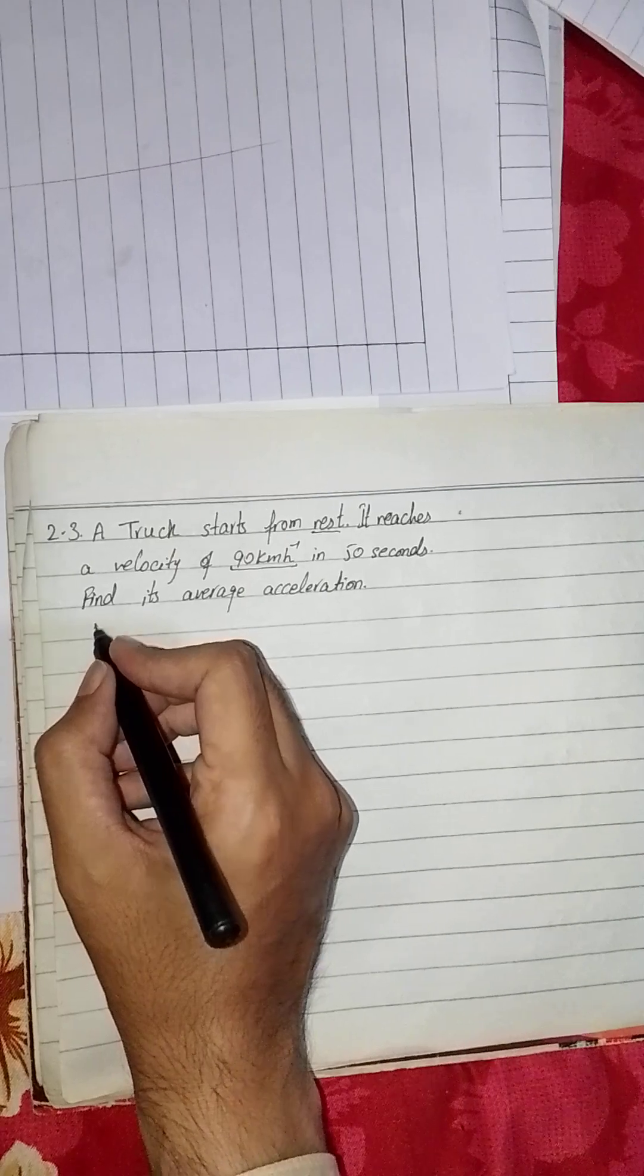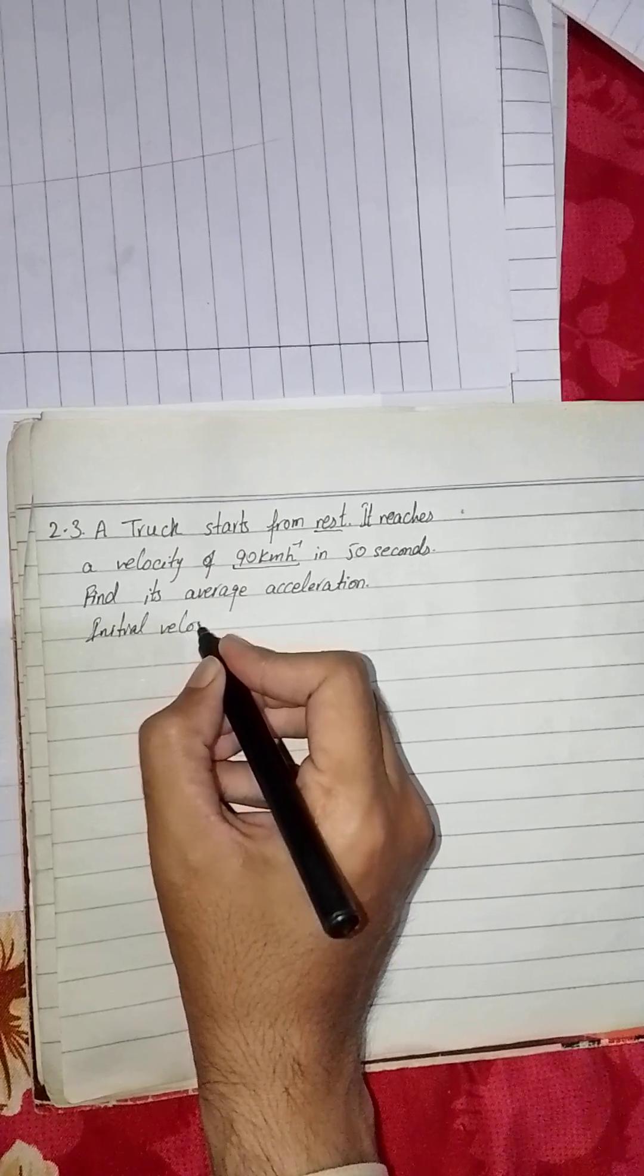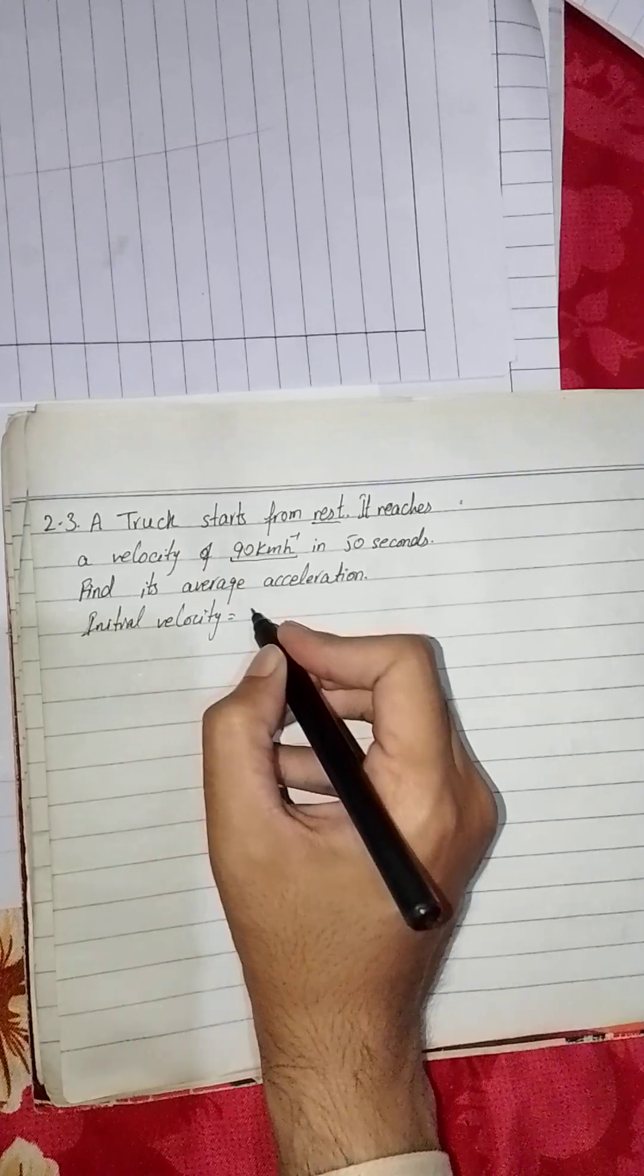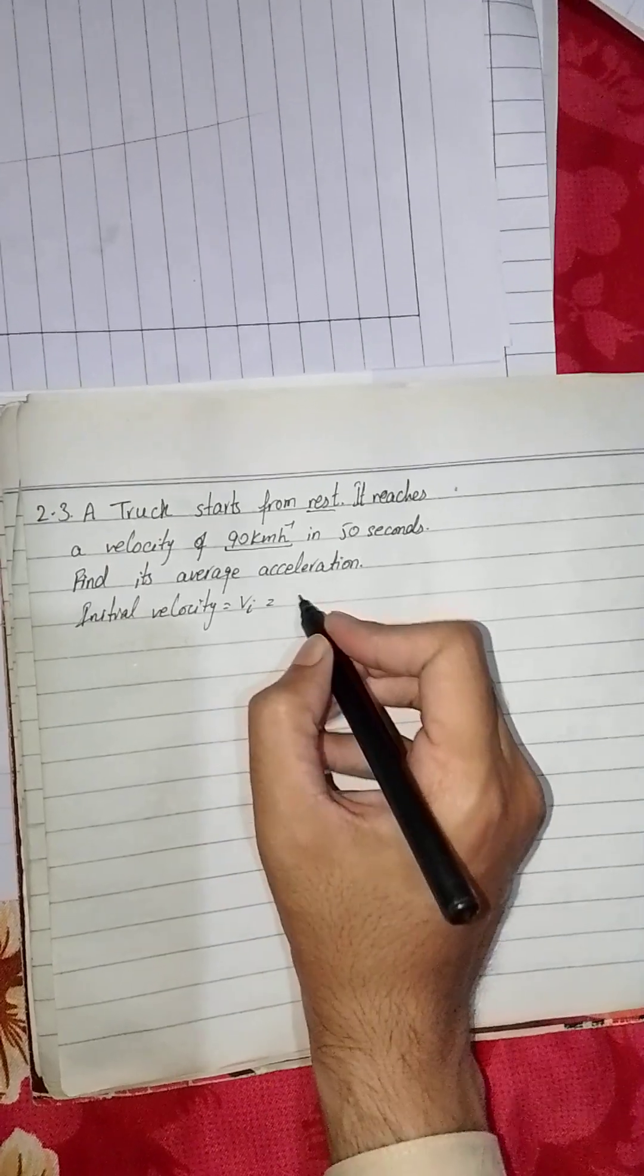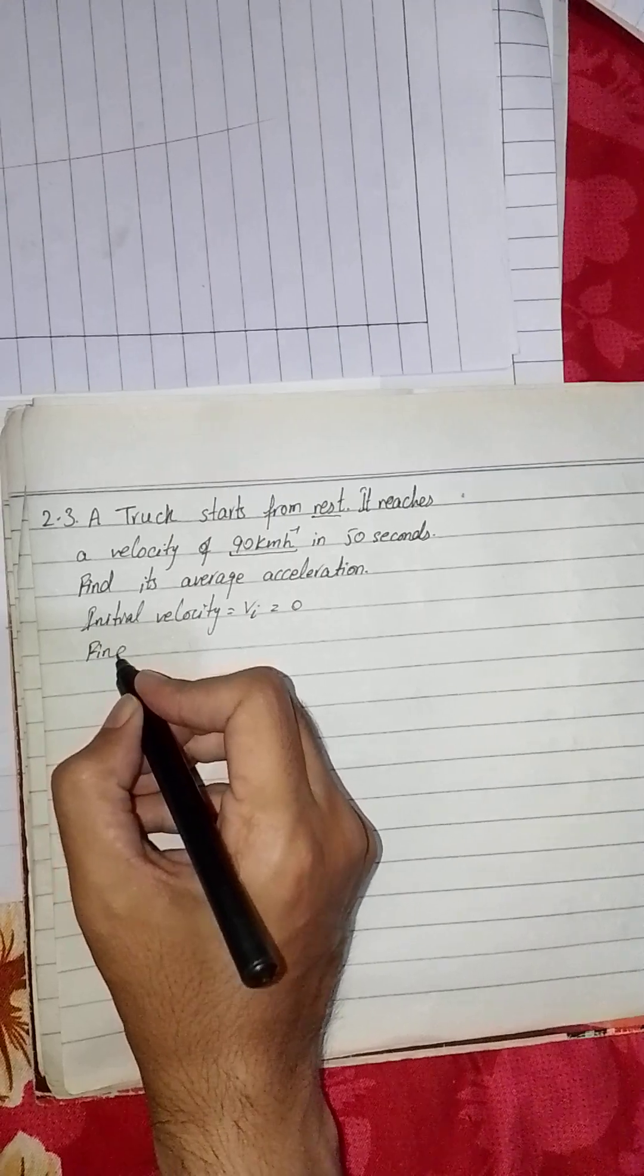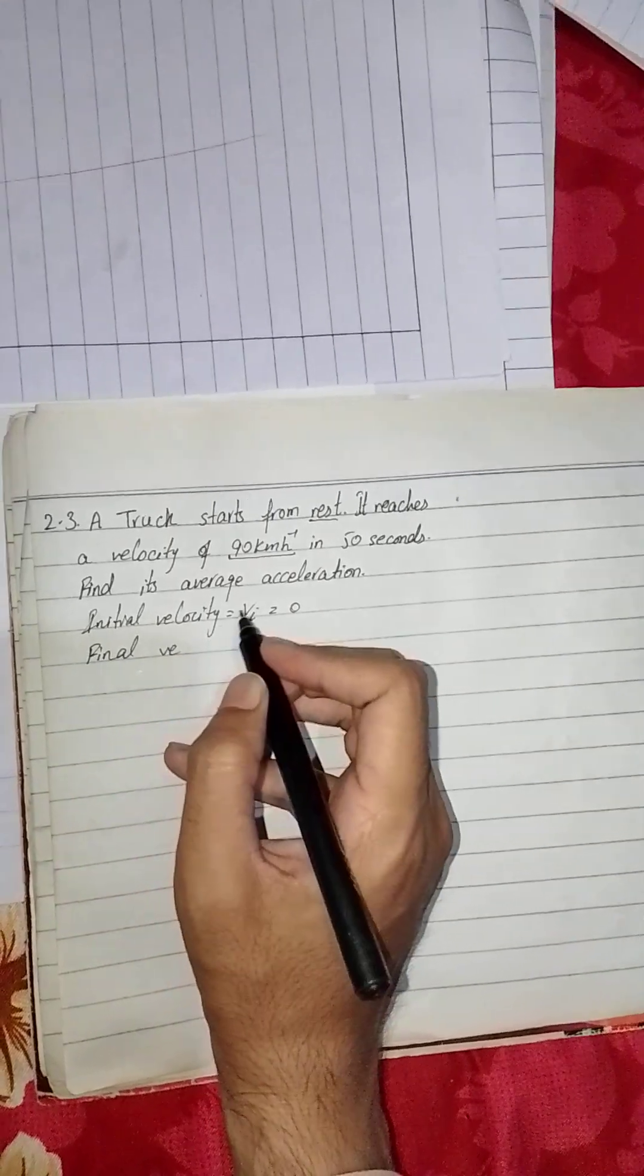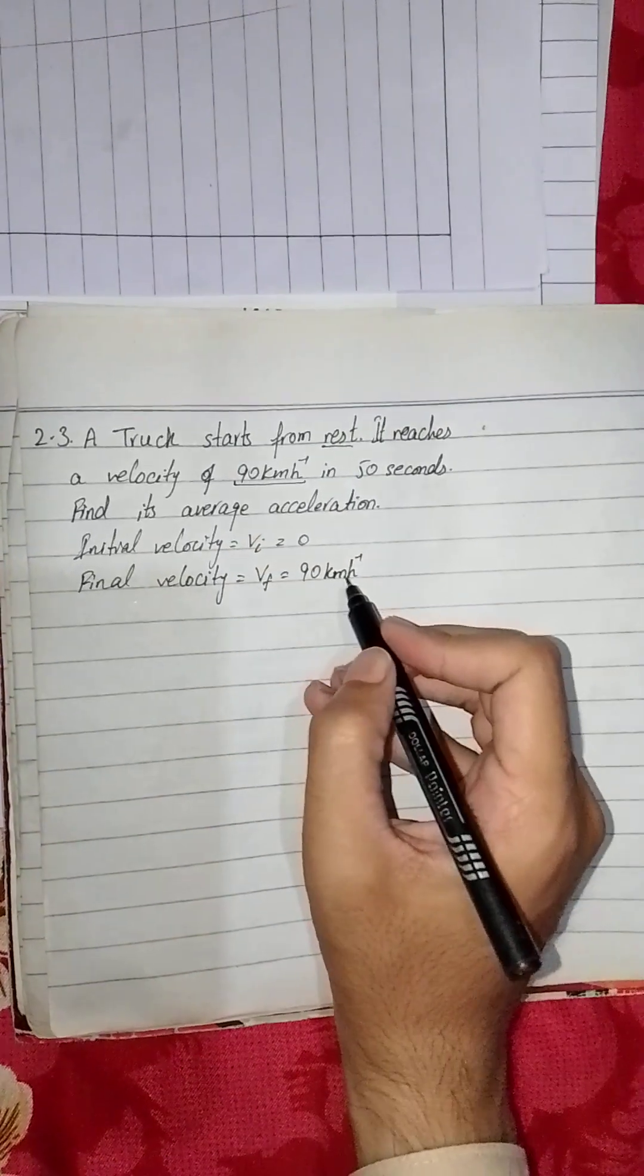Initial velocity, if we represent it by vi, is equal to 0, and the final velocity of the truck is 90 km per hour.